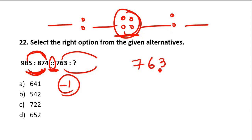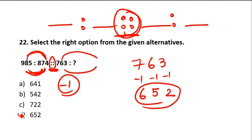Now apply the same to 7, 6, 3: 7 minus 1 is 6, 6 minus 1 is 5, 3 minus 1 is 2 — giving 6, 5, 2. Option D, 652, is the answer. Analogy is about similarity: the same connection in the first pair must be present in the second pair.